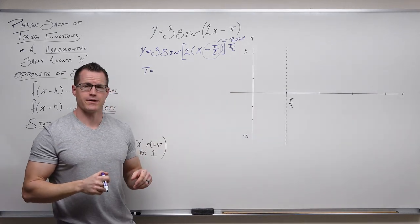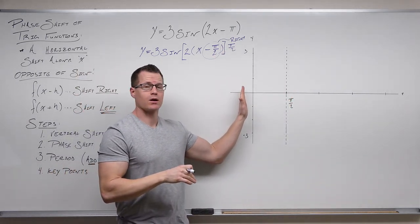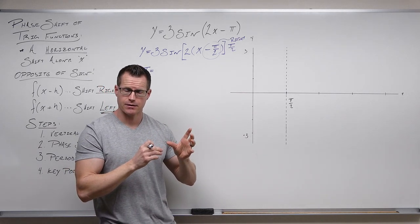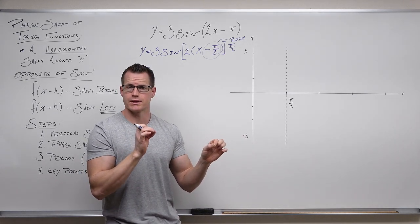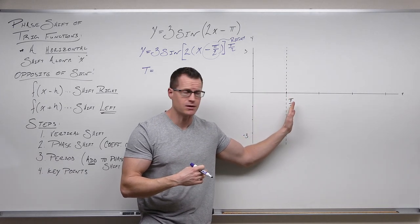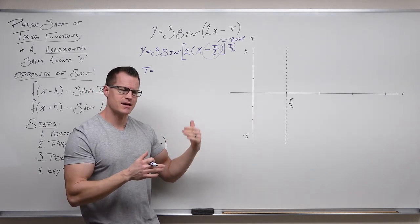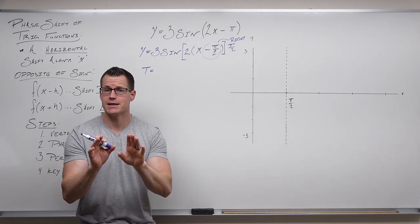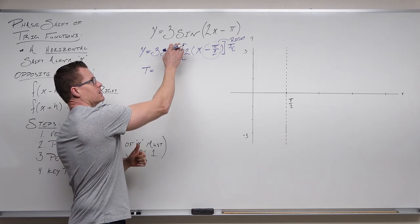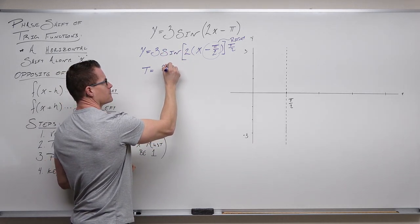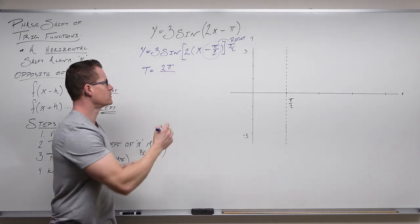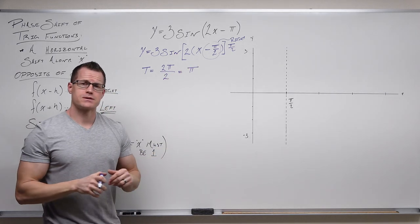We've shown the phase shift of right π/2 on the graph, treating that shifted position as the new y-axis. Our key points are based on whatever trig function we have. For sine, x-intercepts occur at the ends and center of the period, with key points at the quarters. The period starts at this shifted location — treat it like the origin. Now find the period: sine has period 2π, divide by the coefficient 2, giving period π.